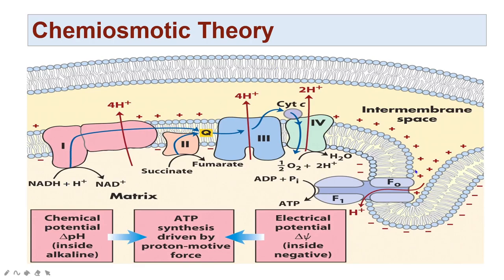These two forces push protons back through the F0F1 channel. The inner mitochondrial membrane is a very intact membrane — even small H+ ions cannot pass through it freely. H+ ions can only enter through the proper F0F1 channel, and only protons entering through this fifth complex will drive ATP synthesis — not through any other mechanism.